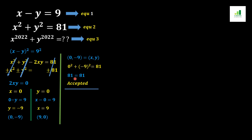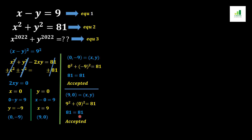Next I check the ordered pair (9, 0) in equation 2: 9 squared plus 0 squared equals 81 plus 0 equals 81, and the right side is also 81. Both sides are equal, so this is another acceptable condition.